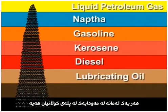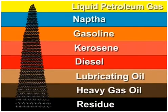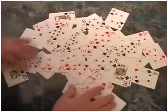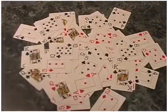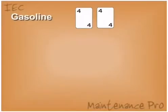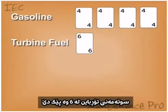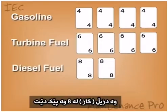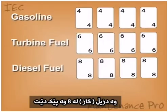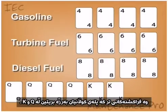Each one covering a range of boiling points. Think of crude oil as a bunch of shuffled up playing cards. The gasoline is the fours, the turbine fuel is the sixes, the diesel fuel is the eights, and the fractions with the highest boiling ranges are the kings and queens.